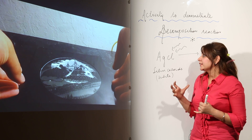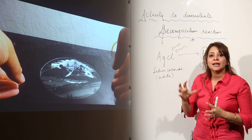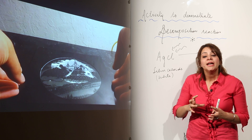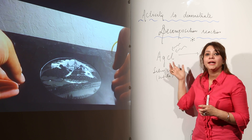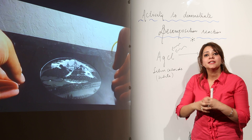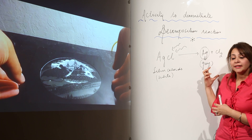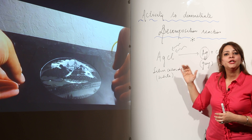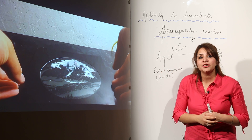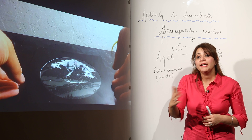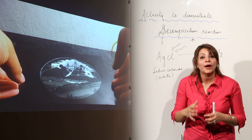When sunlight falls on AgCl, the sunlight energy is sufficient to break the bond between silver and chlorine, separating them from each other, giving us silver and chlorine. The popular use of AgCl or any other silver halide is in black and white photography.